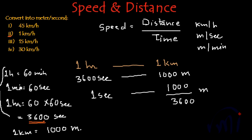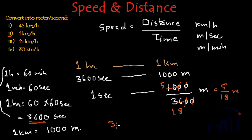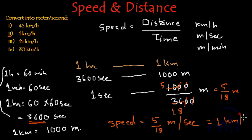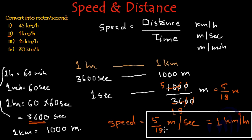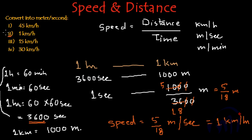If we solve it further, these zeros get cancelled — divide both numerator and denominator by 100 — and this gives us 5 by 18 meters per second. So 5/18 meters are covered in one second. That means the speed is 5/18 meters per second. Originally it was 1 kilometer per hour, so 1 kilometer per hour is equal to 5/18 meters per second. This was the conversion for the second question.